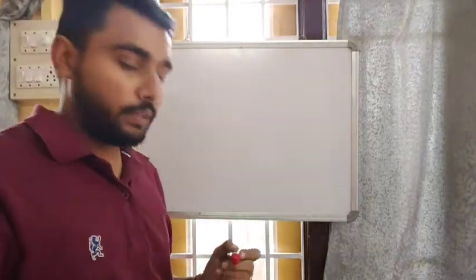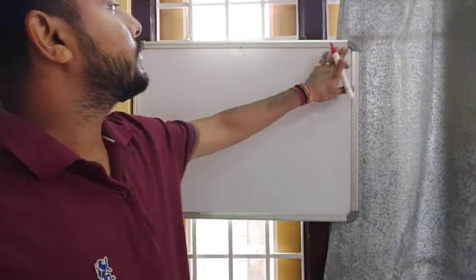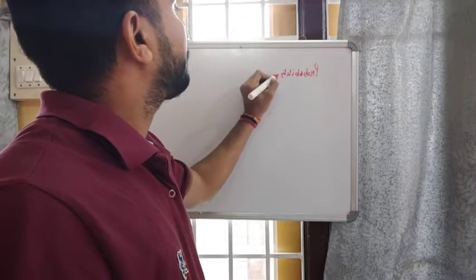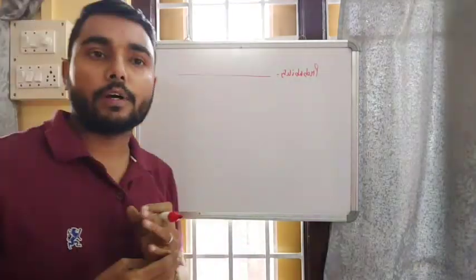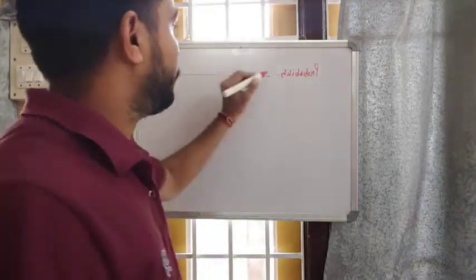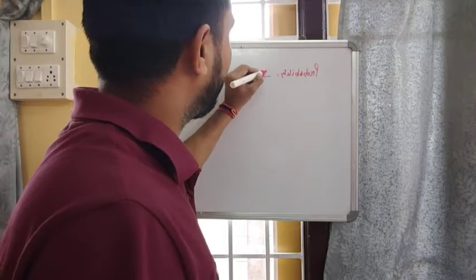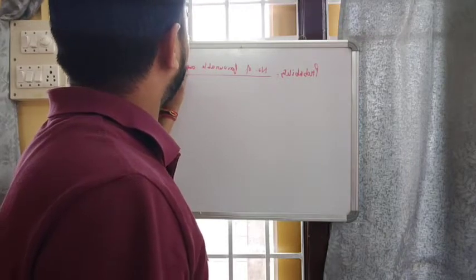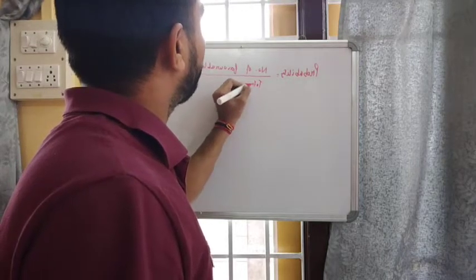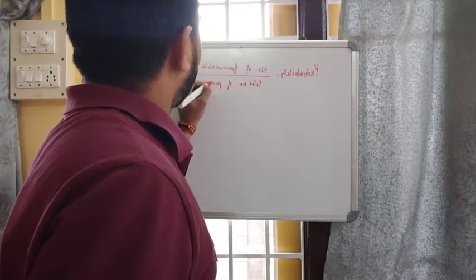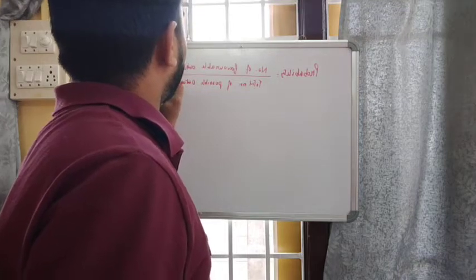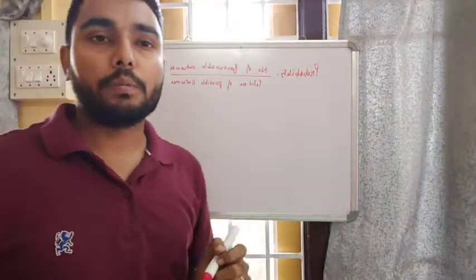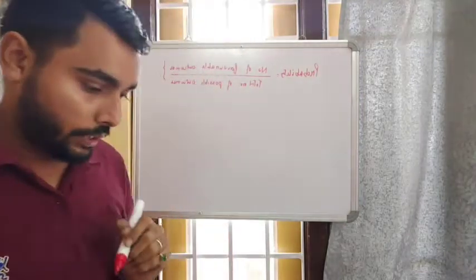Hello everyone. In the last class we discussed about probability, so let's recall it once. Probability can be obtained by the ratio of the number of favorable outcomes to the total number of possible outcomes. By dividing these two you get the probability of the event you are going to find.